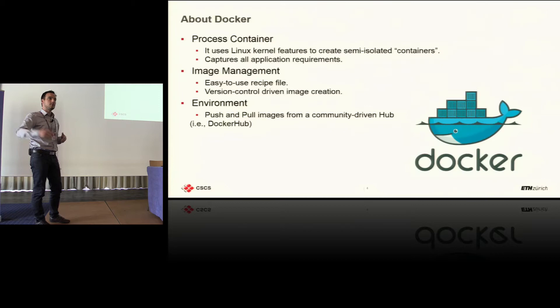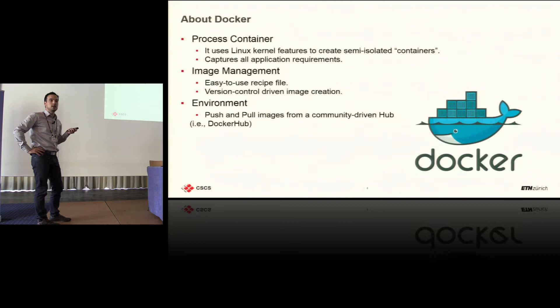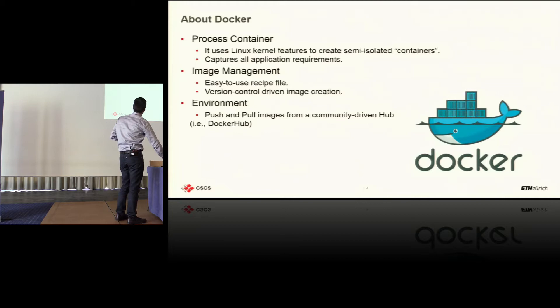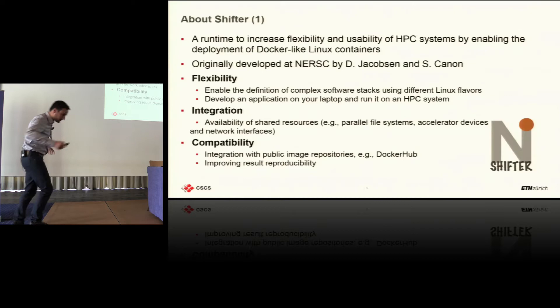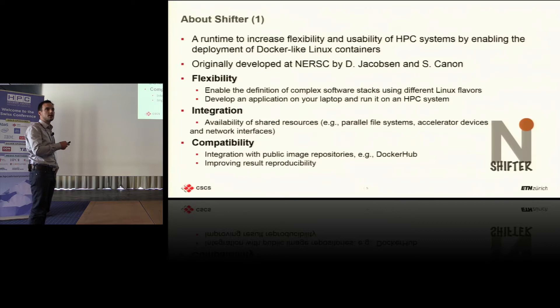You don't get one big blob of the last version, but the complete timeline of how the container got there. In terms of the environment, Docker gives us the ability to pull and push images from a community-driven hub like GitHub, but with binary images. And what is Shifter? Shifter is a runtime — I have to be careful. Shifter is a runtime to increase the flexibility and usability of HPC systems by enabling the deployment of Docker-like Linux containers. That's the marketing line of Shifter.